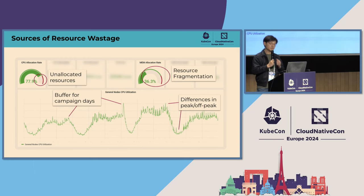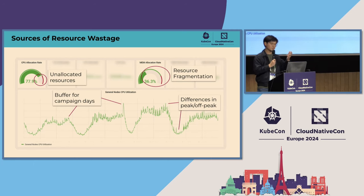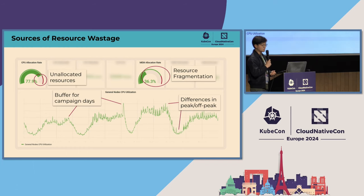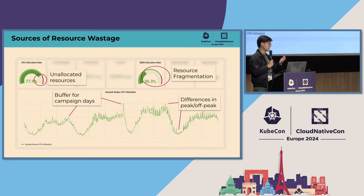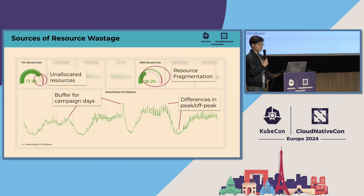Most of our services also exhibit usage patterns that follow that of our end users, which are mostly concentrated in just a handful of time zones across the Southeast Asian and Latin American time zones. As such, we usually see lower utilization during off-peak periods when our users are asleep, which means we usually have tens of thousands of CPU cores just sitting idle during those times.